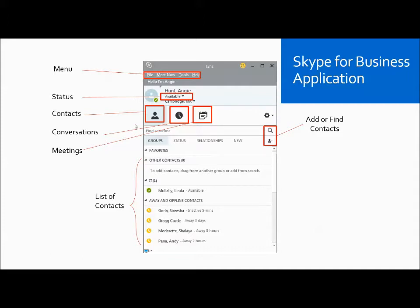Underneath that, you have icons for contacts, conversations, and meetings. And under that, you have your list of contacts. Over on the right, you can add or find contacts.